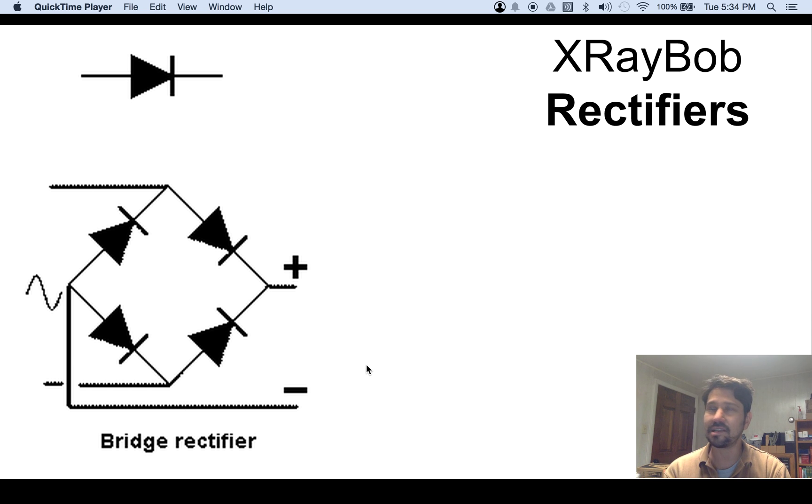So the last thing just ahead of the x-ray tube is the rectifier circuit, which converts AC to a high voltage DC. Well, converts high voltage AC to DC.